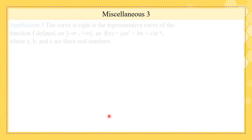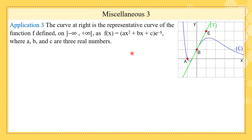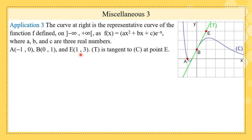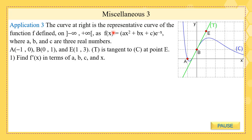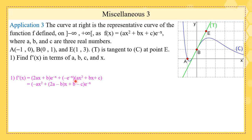Now miscellaneous problem three: the curve C is the representative curve of a function f defined as f(x) = (ax² + bx + c)e⁻ˣ, where a, b, and c are real numbers. We know A(−1, 0), B(0, 1), E(1, 3), and that t is tangent to C at point B. The first question asks to find f'(x) in terms of a, b, c, and x. This is of the form u·v, so we apply u'v + v'u.